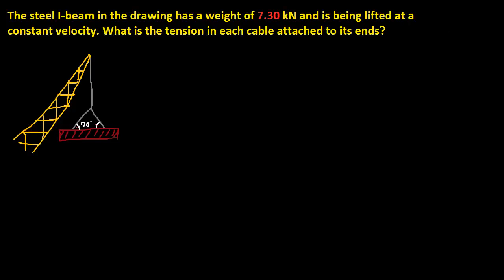Welcome to this explanation of the steel I-beam problem. In this problem, we have a steel I-beam with a weight of 7.3 kilonewtons — note your numbers may differ. The beam is being lifted at a constant velocity. What is the tension in each cable attached to its end?